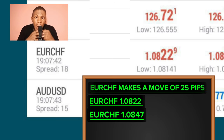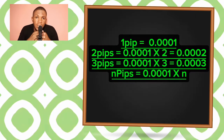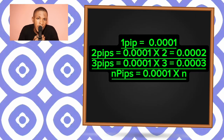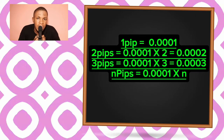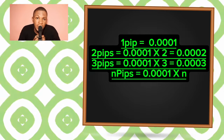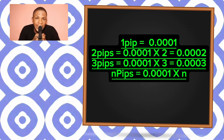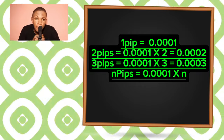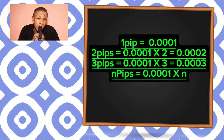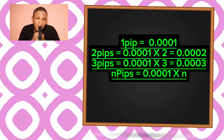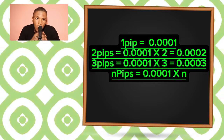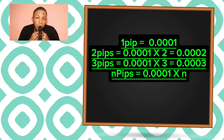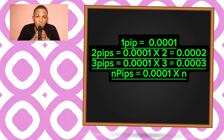Here is a formula to calculate pips in this case: one pip equals 0.0001; two pips equals 0.0001 times 2, which equals 0.0002; three pips equals 0.0001 times 3, which equals 0.0003. Take note of the above. For most currency pairs in forex, the pip calculation starts from the fourth decimal place.